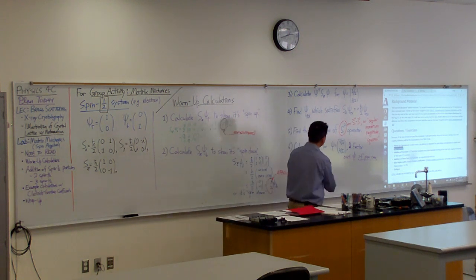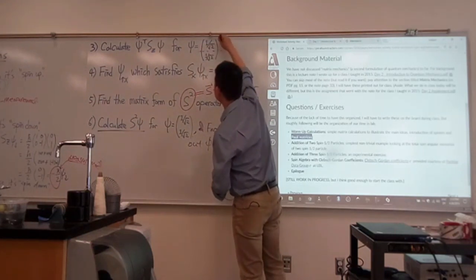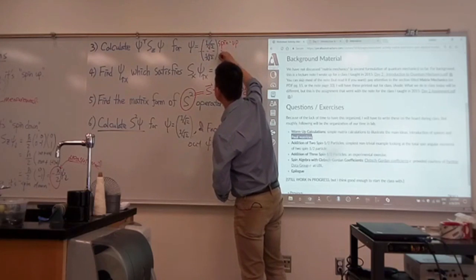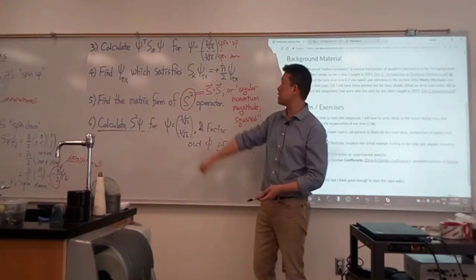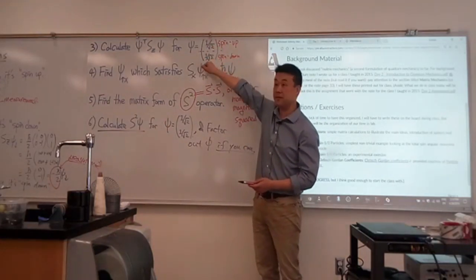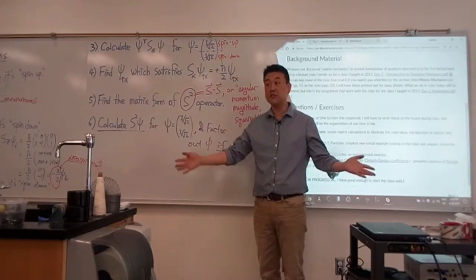So when you look at this state, you might say, oh, so it has, or you know, kind of divide it this way. This is the spin-up portion of it. This is the spin-down portion of it. So maybe intuitively you say it has equal portion of spin-up and spin-down. So when you take the average, it should average out to zero.